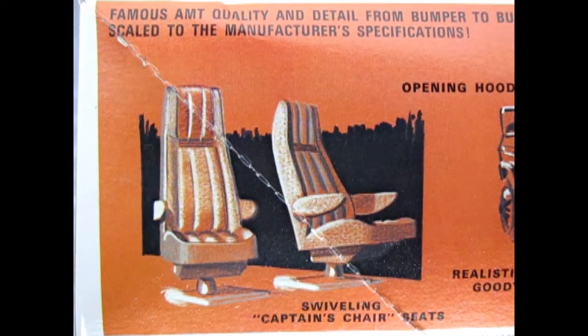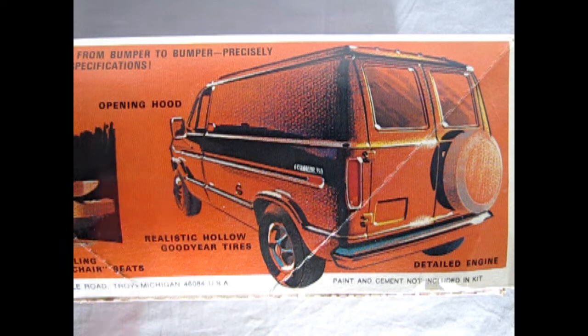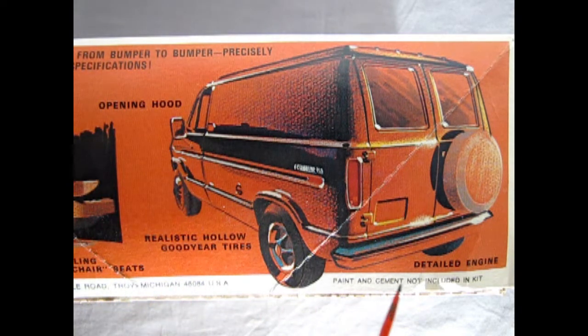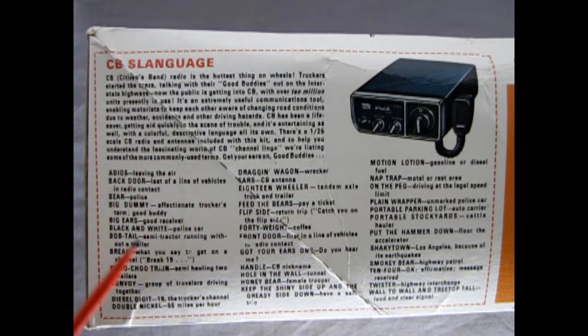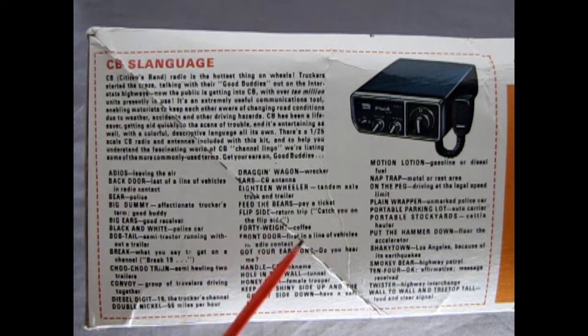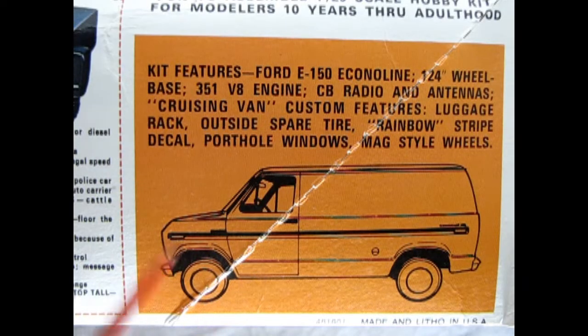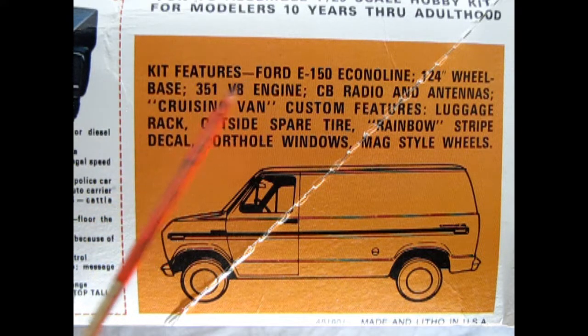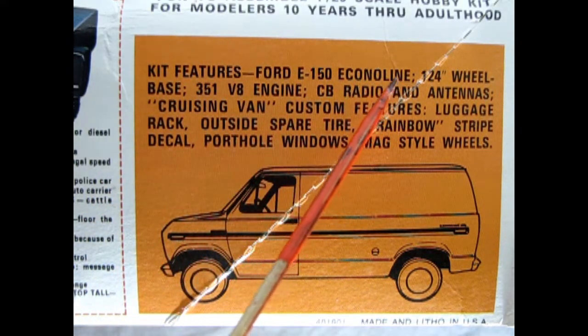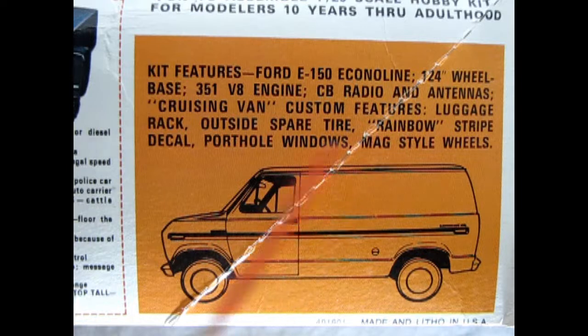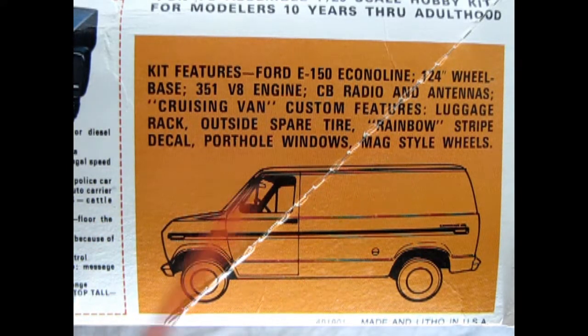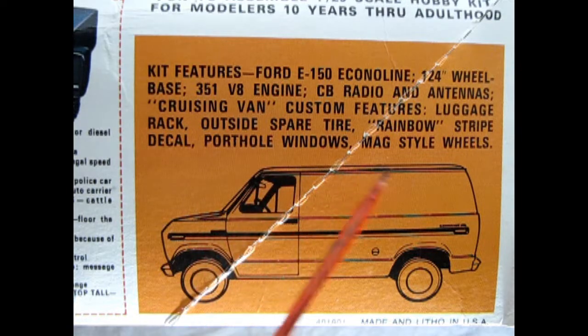As we turn the box up on its side, we can see these awesome swiveling captain chair seats, followed by this rear three-quarter shot of our van which features an opening hood, realistic hollow Goodyear tires and a detailed engine. And along the side of this great cruising van, we get this CB language chart which tells us what all the different slang terms on the CB radio was, such as feed the bears which means to pay a ticket. Finally we have this side view illustration which says that the kit features are a Ford E-150 Econoline, 124-inch wheelbase, 351 V8 engine, CB radio and antennas, cruising van custom features, luggage rack, outside spare tire, rainbow striped cowl, porthole windows and mag style wheels.